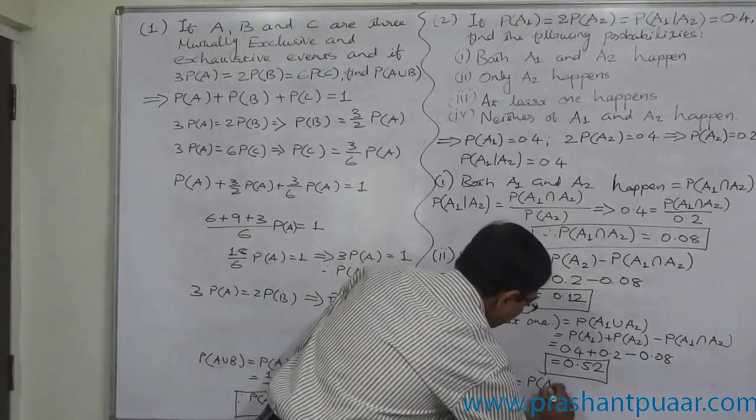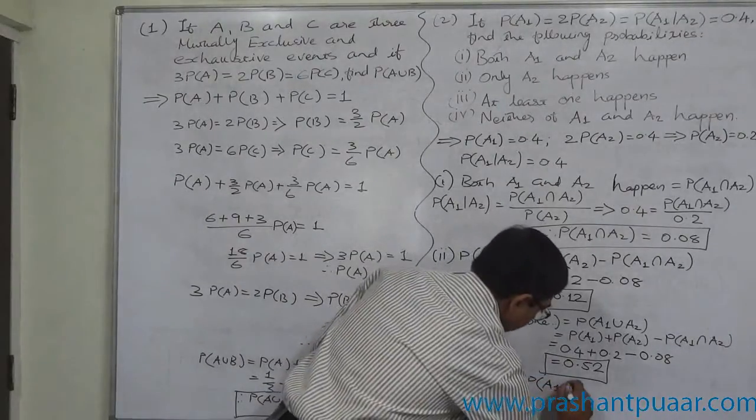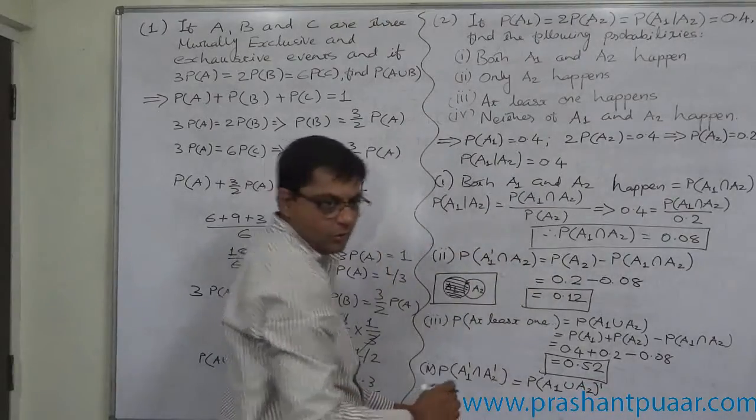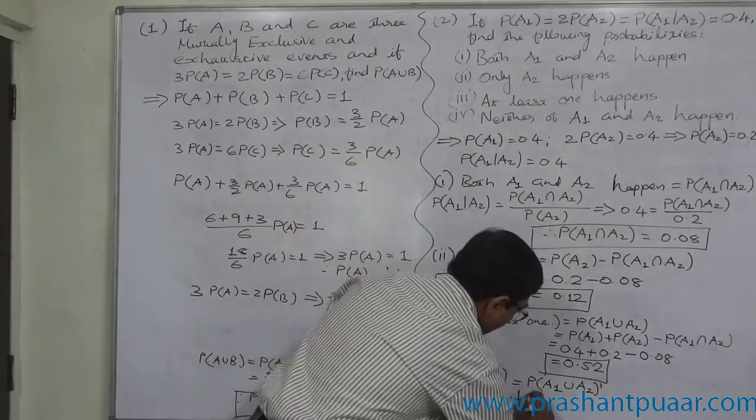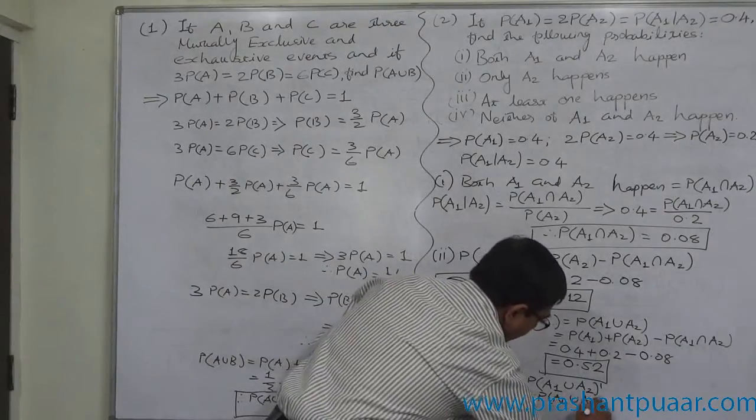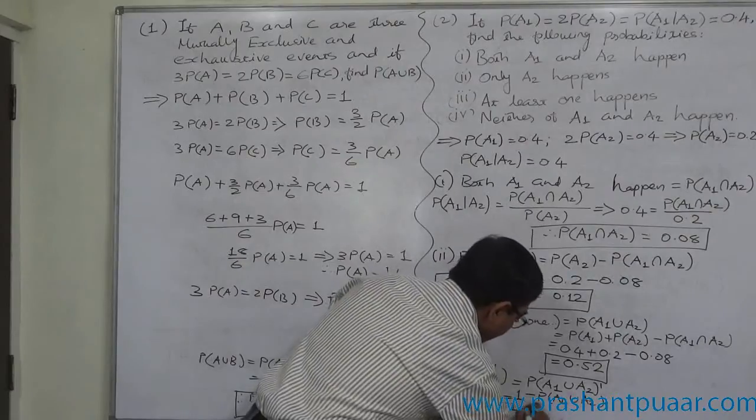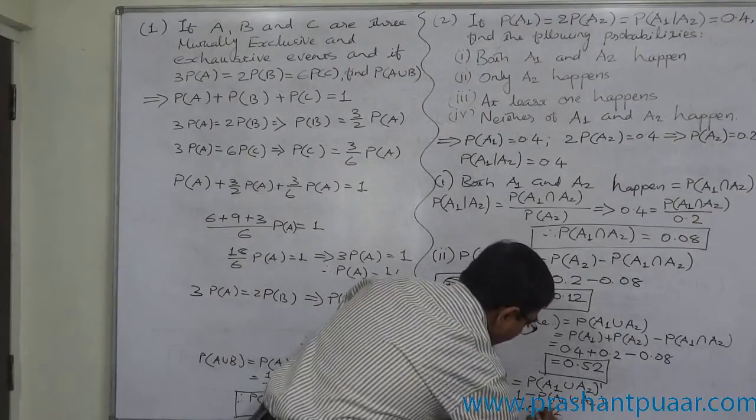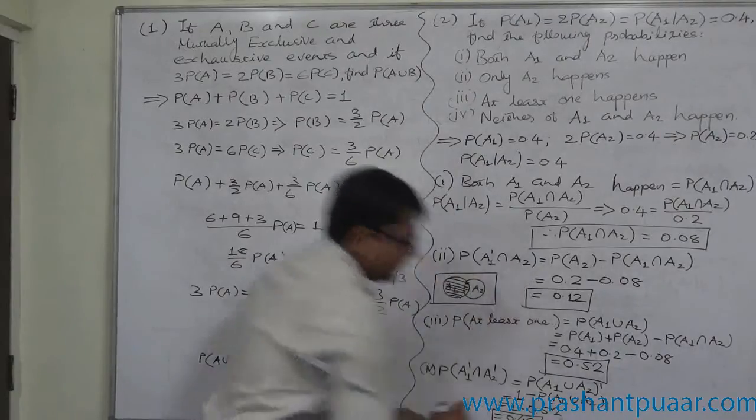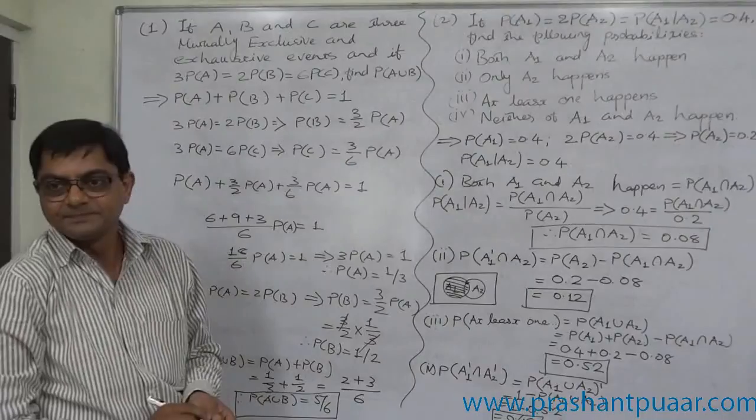According to De Morgan's rule, it is P of A1 union A2 all complement. That means 1 minus P of A1 union A2. That means 1 minus 0.52. So ultimately the answer comes to 0.48.